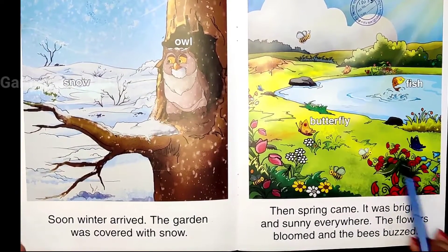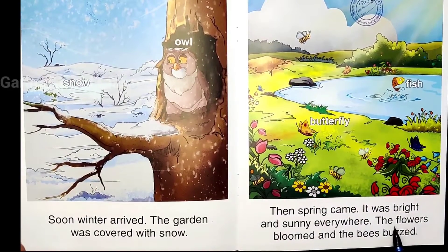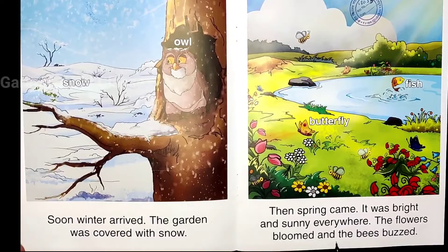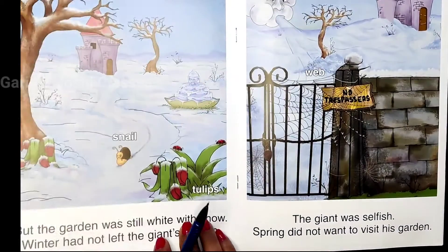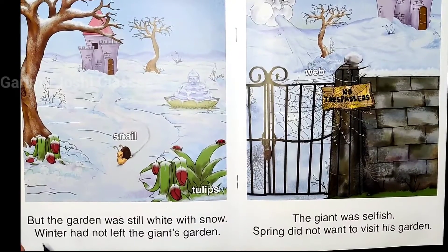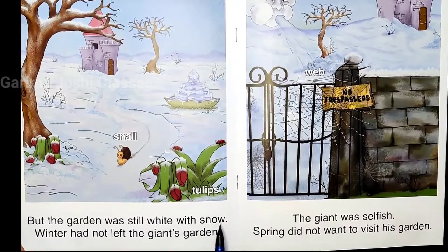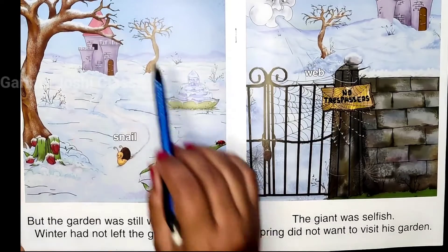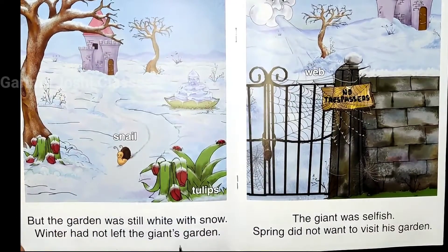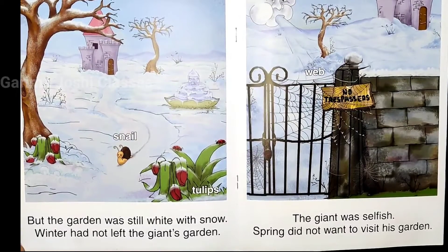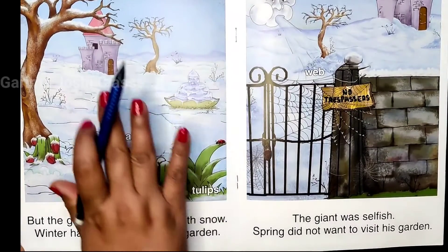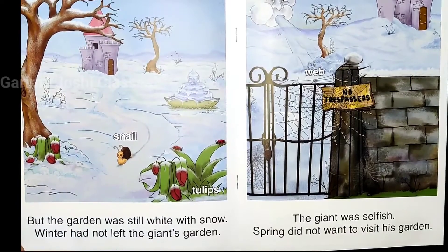Beautiful flowers, butterflies, many insects, and many birds were there in spring. The flowers were blooming and bees were buzzing everywhere. But the giant's garden was still white with snow — there was no spring season in the garden. Winter had not left the giant's garden.